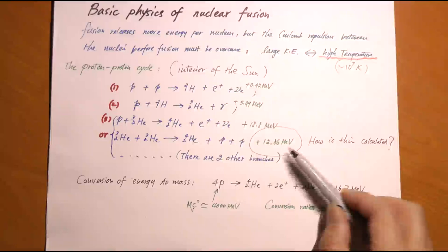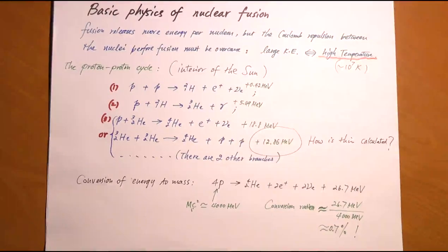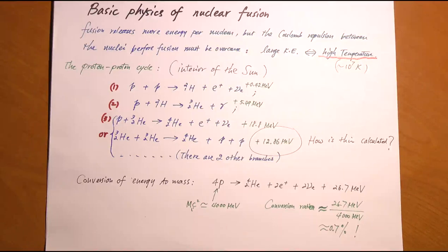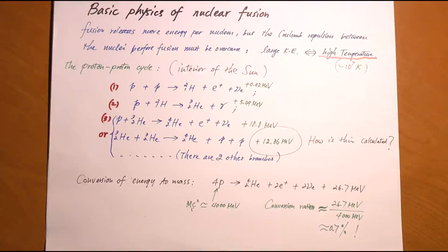There are also two other branches of the proton-proton cycle not written down here. The proton-proton cycle going on in the Sun requires a temperature of about 15 million kelvin. That sounds very high, but it is relatively low compared with other nuclear fusion events. This is partly because the gravitational pull at the center of the Sun causes a very high density of protons, making them very close together to begin with, which allows fusion to be sustained at a relatively lower temperature.